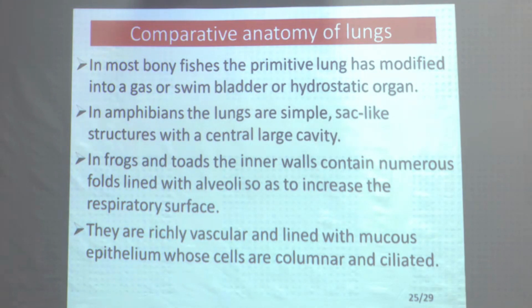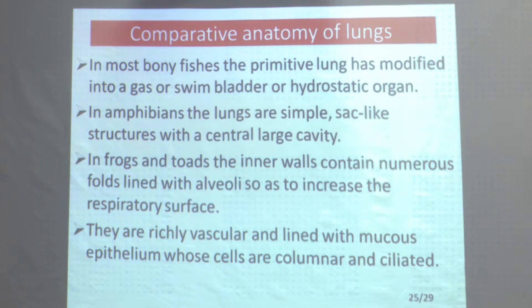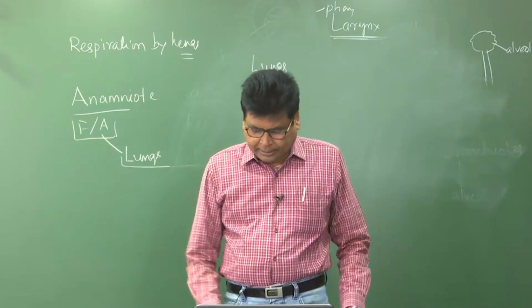In amphibians, the lungs are simple sac-like structures with a central large cavity. In frogs and toads, the inner wall contains numerous pores lined with alveoli, increasing the respiratory surface. They are richly vascularized and lined with mucous epithelium whose cells are columnar and ciliated, and they are engaged in gaseous exchange.